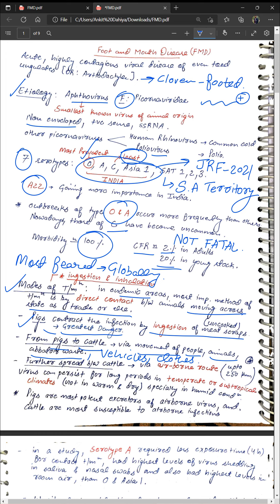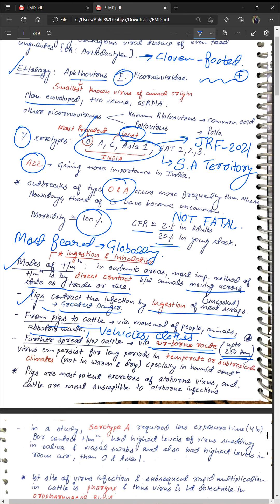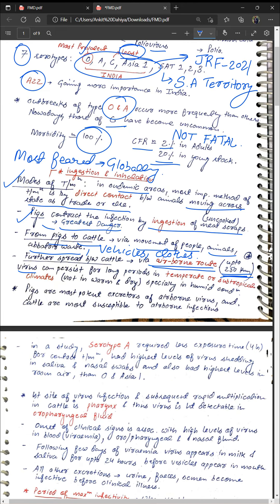Further spread between cattle occurs via the airborne route. Via aerosol, the virus can spread up to 250 kilometers — showing how severe and difficult to control an FMD outbreak can be. The virus can persist in aerosol for long periods especially in temperate and subtropical climates — colder and more humid conditions favor survival, not warm and dry ones.